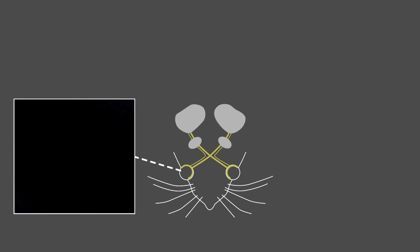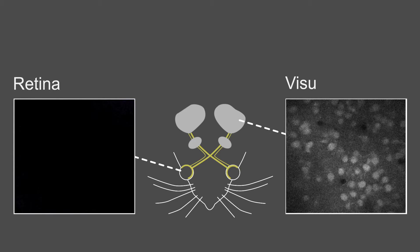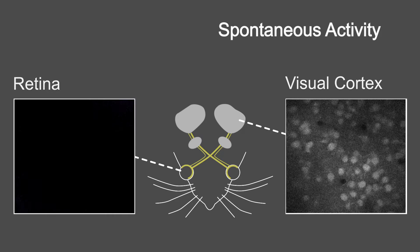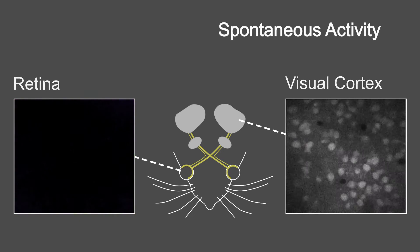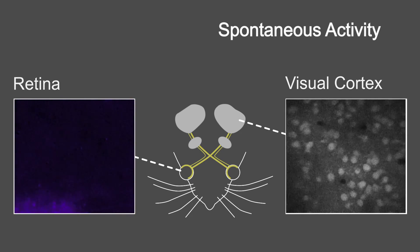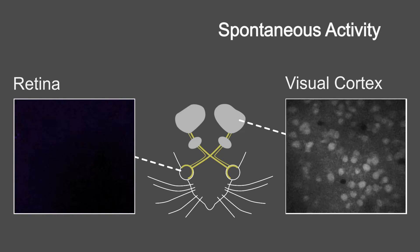An interesting observation has been that the developing brain is spontaneously active even before sensory experience drives their activity. And this spontaneous activity may help wiring up the brain by just simulating activity patterns that would occur later in life through sensory experience.